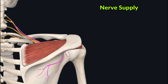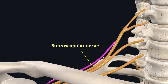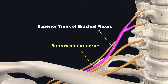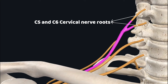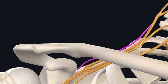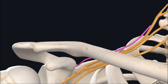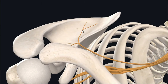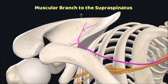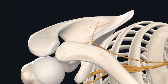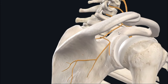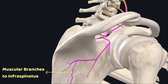The supraspinatus is supplied by the suprascapular nerve, which arises from the superior trunk of the brachial plexus with C5 and C6 cervical nerve roots. The suprascapular nerve travels inferolaterally and posteriorly through the suprascapular notch, reaches the supraspinous fossa and gives a branch to the supraspinatus, then continues through the spinoglenoid notch to reach the infraspinous fossa and supply the infraspinatus.